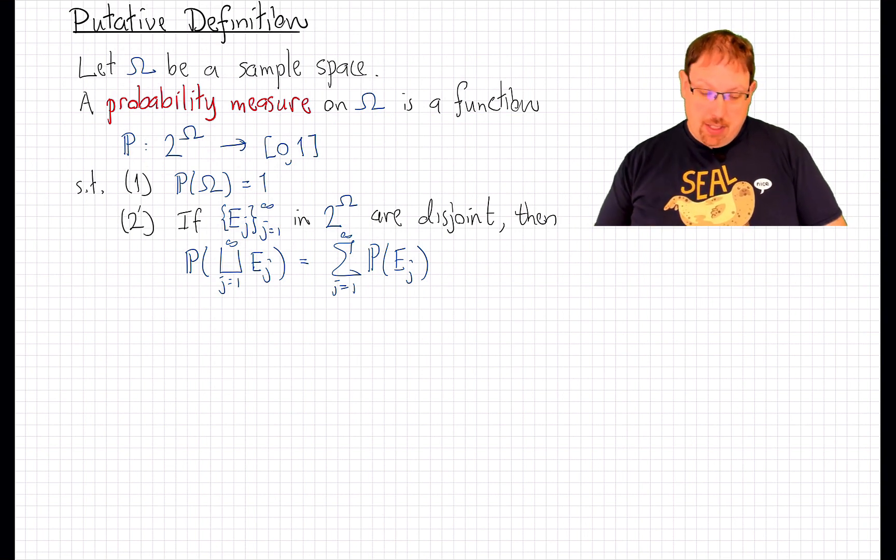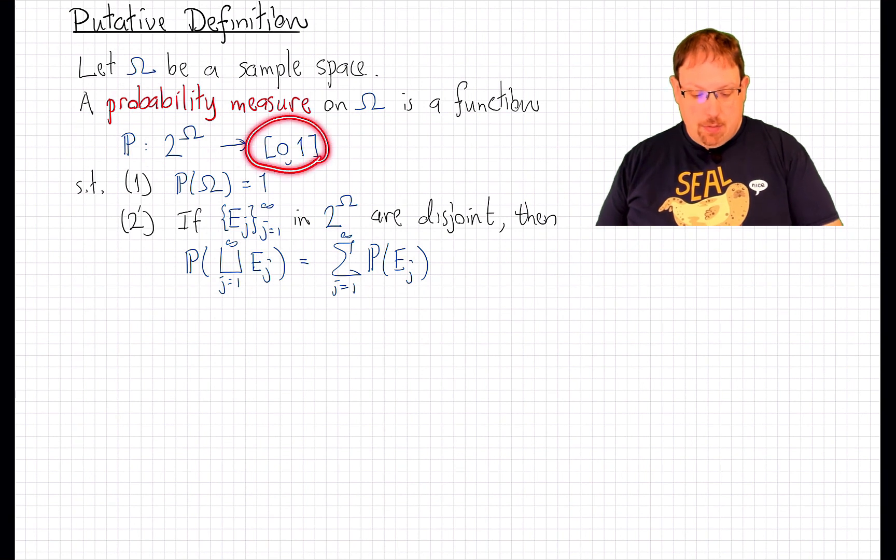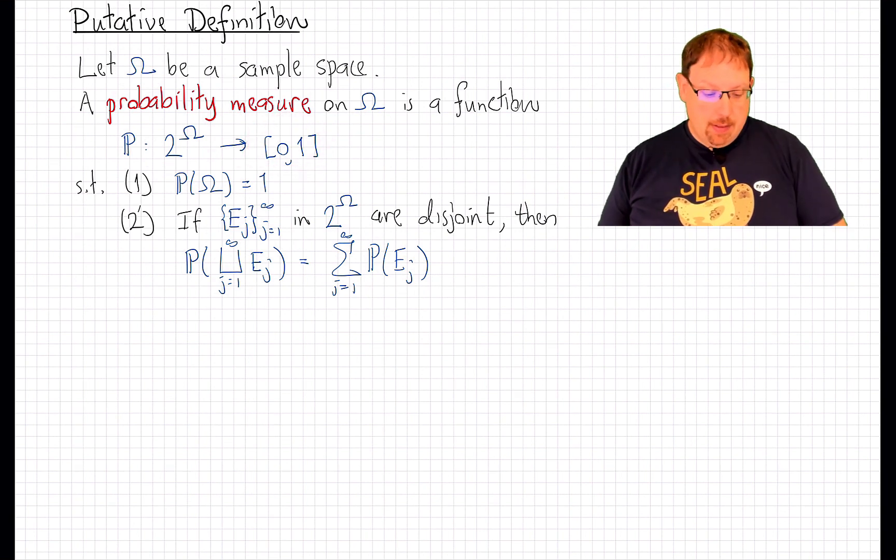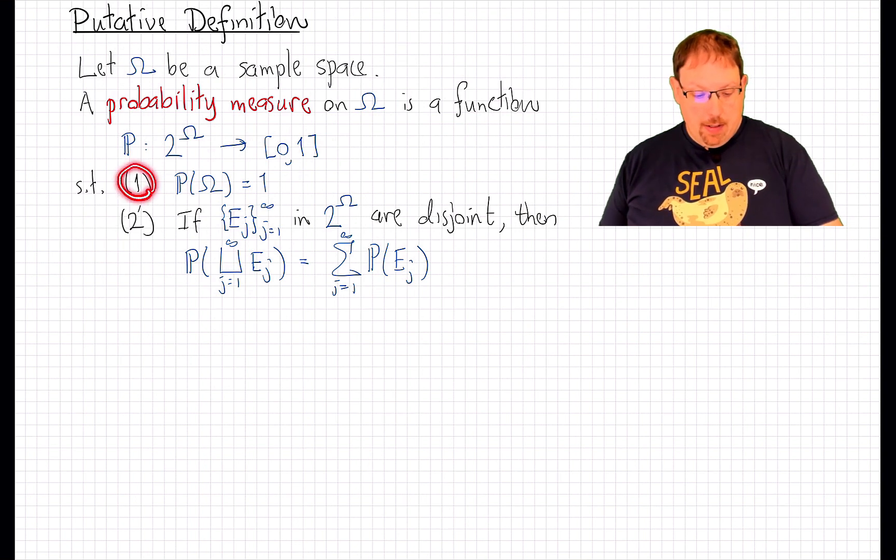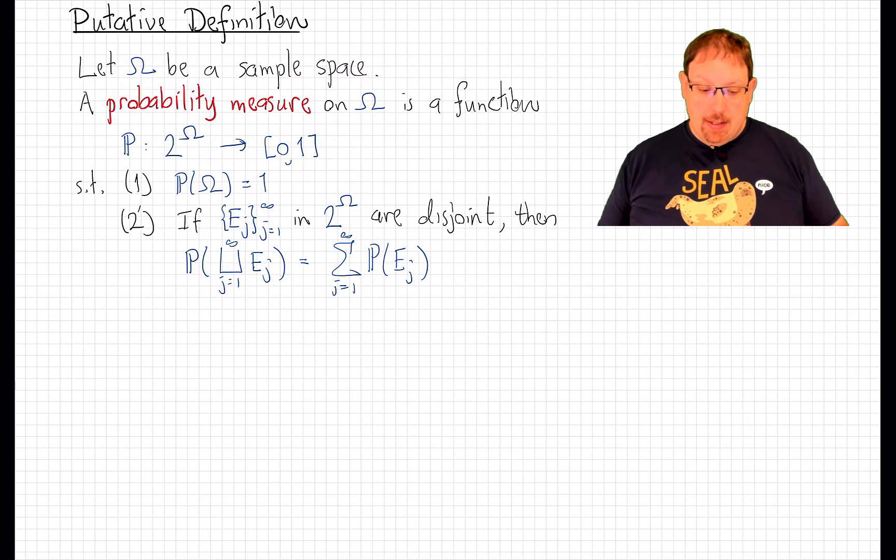It's a function defined on subsets of omega, taking values in the interval from 0 up to 1. And it has these two properties. 1, the probability of the entire sample space, omega, is 1.